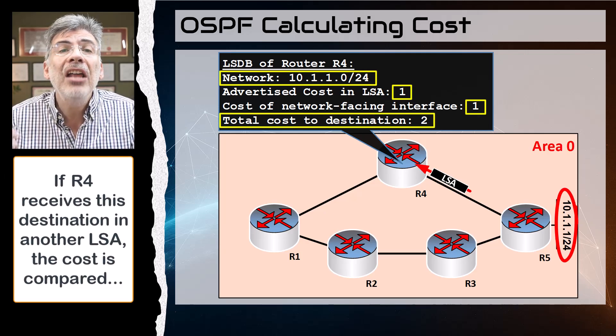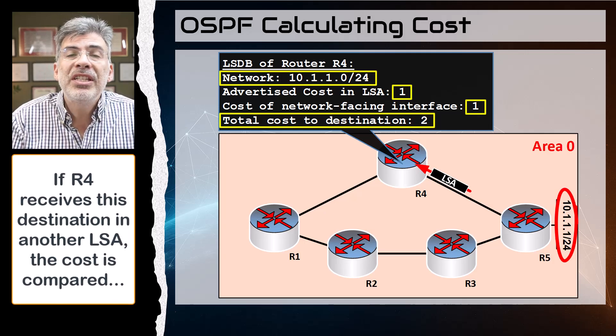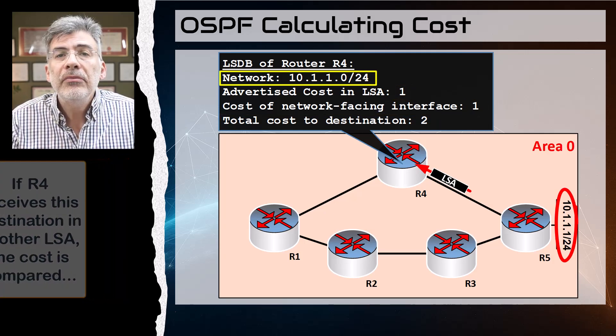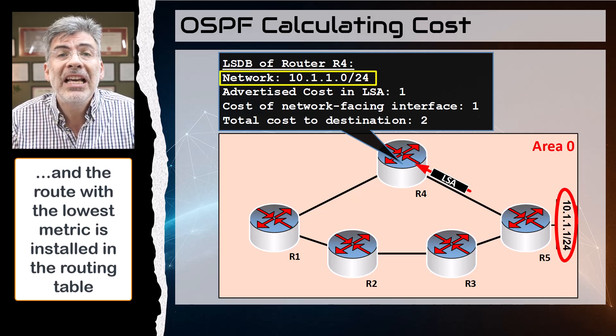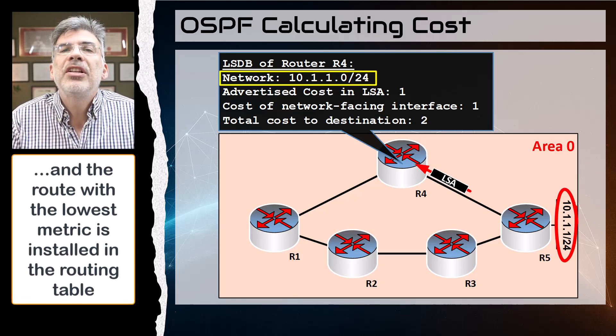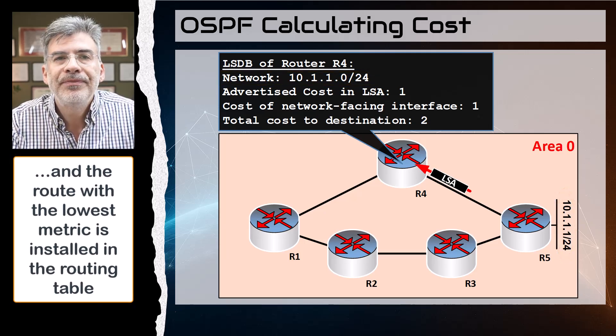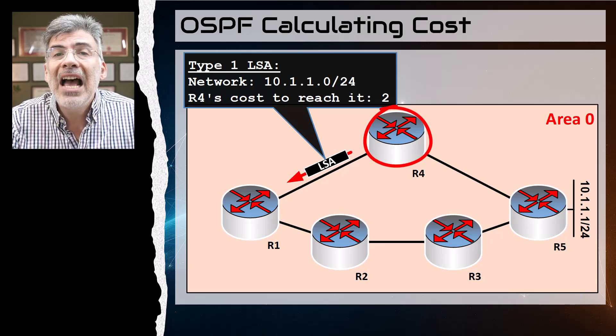That cost is compared to the cost that may exist in other LSAs that may have been received by R4 that contain that network, and the information received from the LSA with the lowest cost is placed in the routing table.